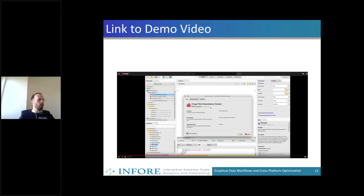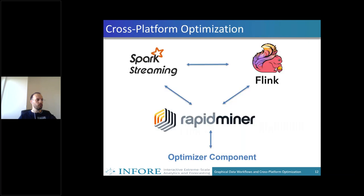Because time is quite short, I will post a link to a YouTube video in the chat after my presentation that shows more details on how it's really executed. What we want to do is not only have a single graphical workflow, but also have some optimization. As you see here, we now have another connection between Spark Streaming and Flink, and a new component: the optimizer.